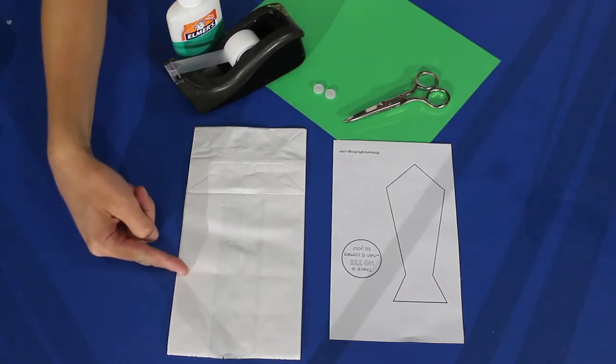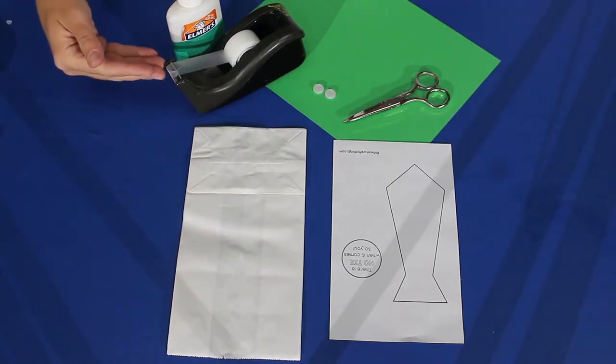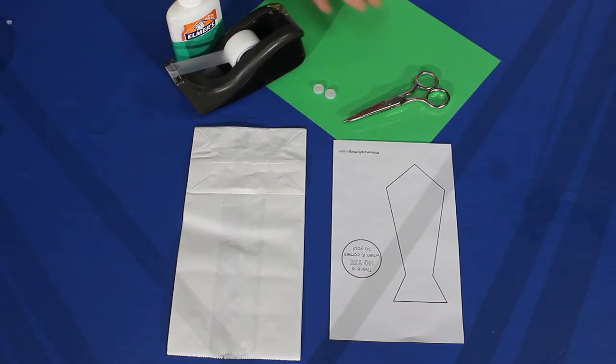This way you'll have something to put your special gift in for that special man in your life. To make this gift bag, you'll need a white paper bag, glue or tape, colored paper, two buttons, a pair of scissors, and the tie and badge template.